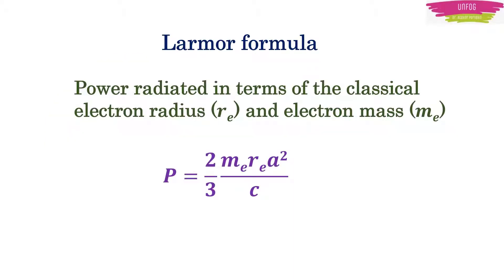According to the Larmer formula in classical electromagnetism, a single point charge under acceleration will emit electromagnetic radiation or as we commonly say as light.